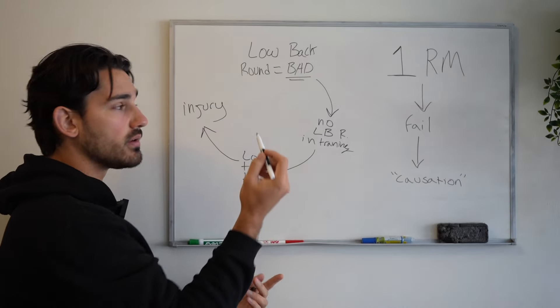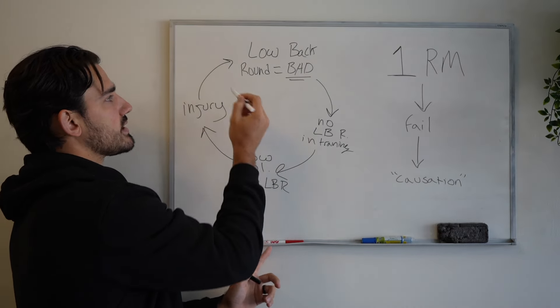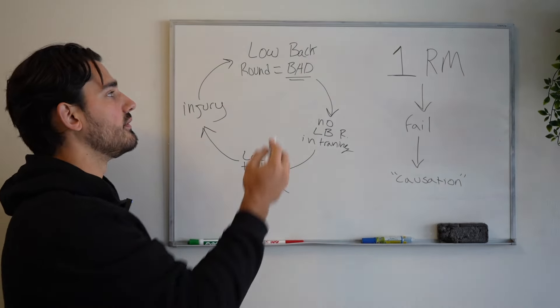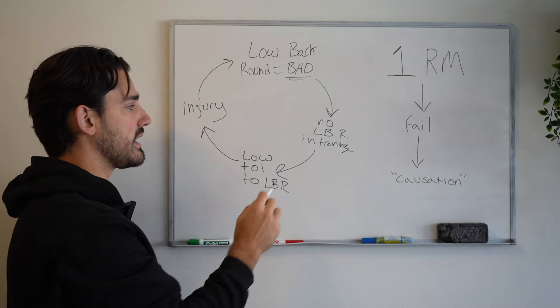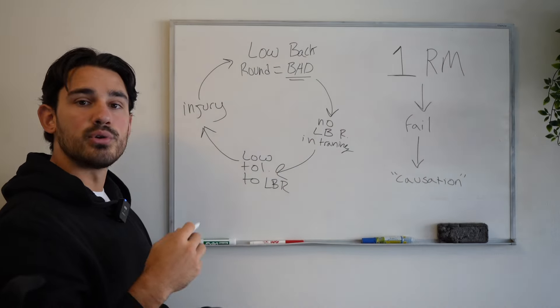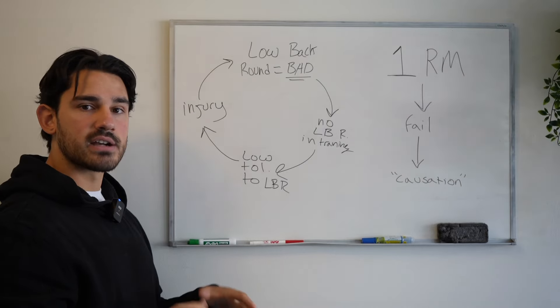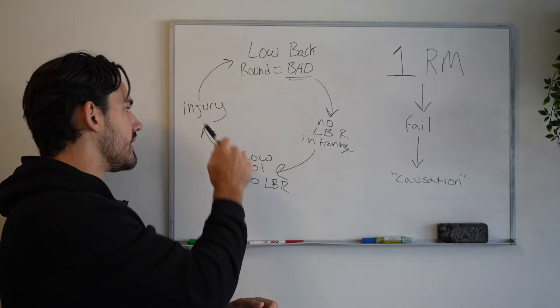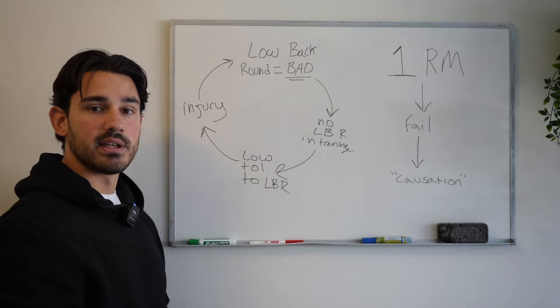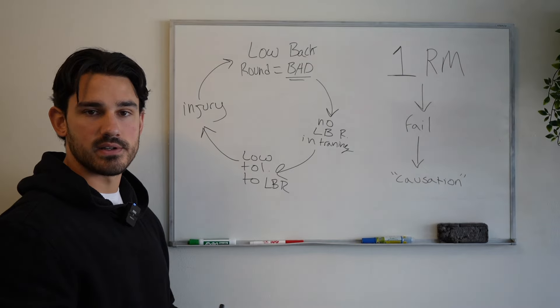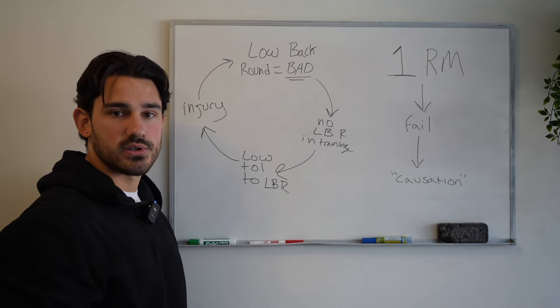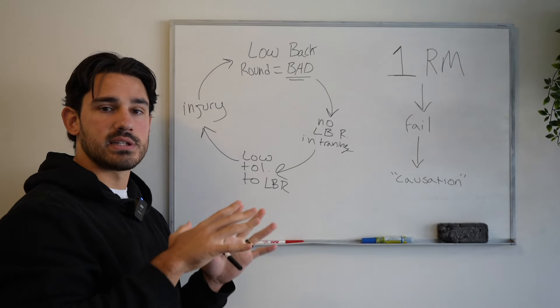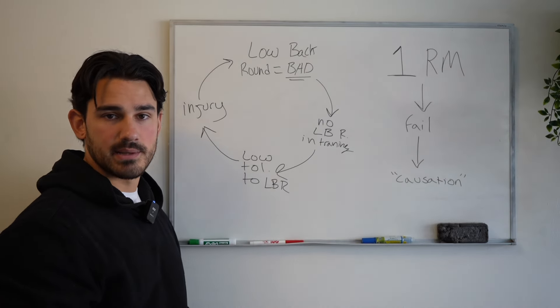And then what does the injury do? Well, it simply just reinforces the cycle of believing that low back rounding is bad, therefore not training it because you think it's bad, therefore having a low tolerance to actually producing force in that position, therefore leading to greater amounts and greater magnitudes of injuries in those positions. And by the way, this applies to all positions and all exercises. It doesn't just apply to a rounded back type of hinge.